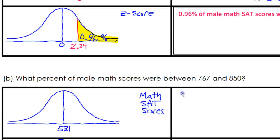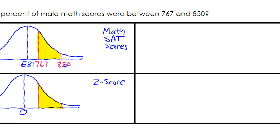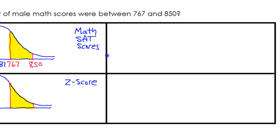Let us move on and see what's next. Part B, what percent of male math scores were between 767 and 850? Both of these numbers are greater than 531, so I'm going to put both of my lines over here to the right. So I'll put a line here and call that my 767, and I'll put a line here and call that 850. So I want the percentage of scores that are between these two values, so I'm going to shade in between here. Let's make similar markings on our z-score graph. So we have these two values. We need to find two z-scores.